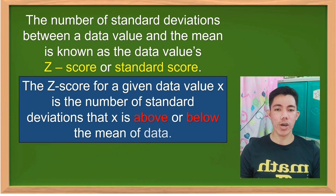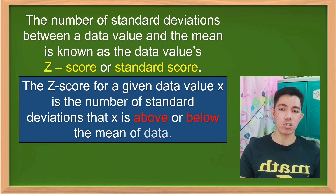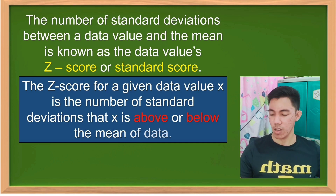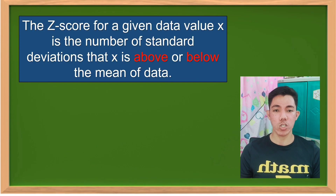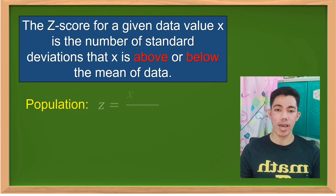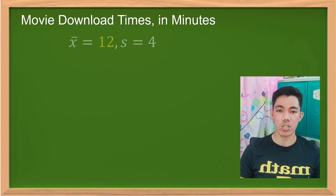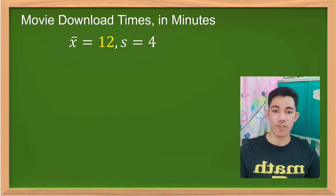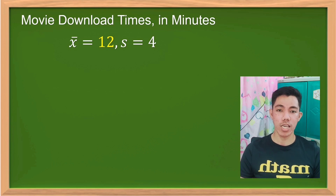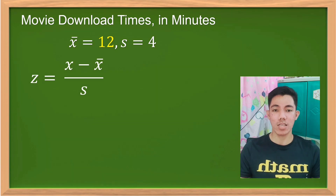So tanong, paano nakuha yung 1.5 standard deviation from the mean at yung 2 standard deviation from the mean? We have here the formula of the Z-score: Z equals X minus mean, all over the standard deviation. Balikan natin yung given kanina — we have the mean which is 12, and standard deviation which is 4. Copy the formula: Z equals X minus mean, all over the standard deviation. Then substitute the given values into the formula.